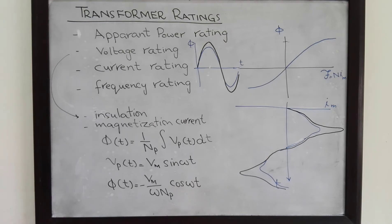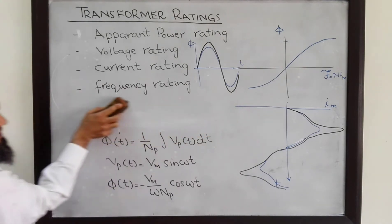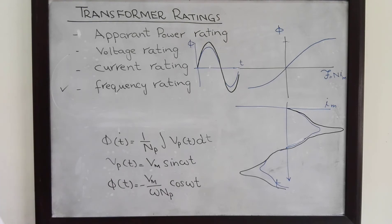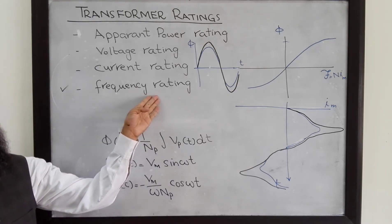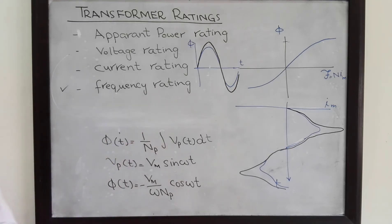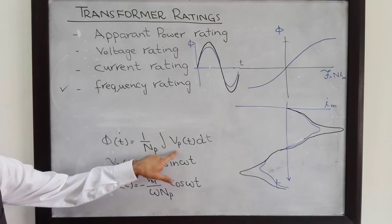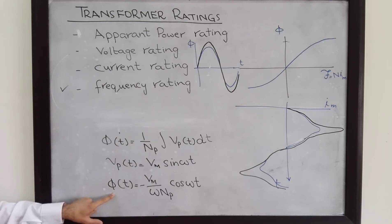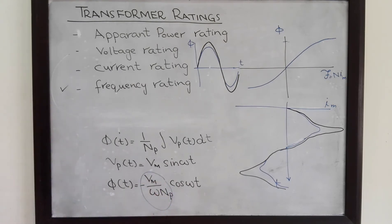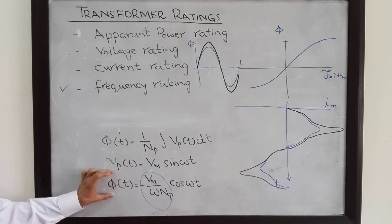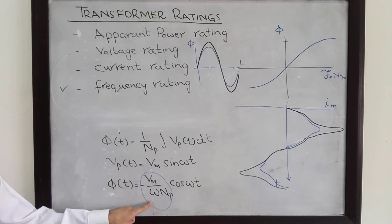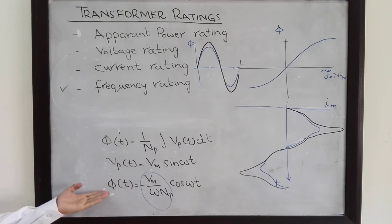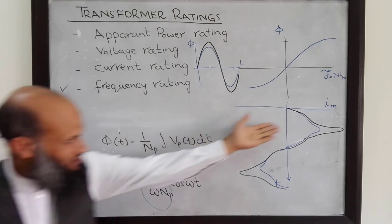The third important rating for a transformer is the frequency. Transformers are designed to work for a particular voltage with a particular frequency. What will happen if the transformer is operated at higher or lower frequencies? That is also apparent from this expression: the voltage on the primary side is related to the flux flowing in the transformer by this relation. For this particular primary voltage, this will be the flux. We can see that by changing the frequency, the maximum value of the flux flowing in the transformer is also changed. Increasing the frequency will result in a decrease in the maximum flux, and decreasing the frequency will result in an increase in the maximum flux. Increase in flux will result in an increase in the magnetization current, as depicted here.